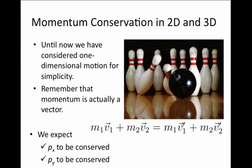We have been considering several examples of collisions and momentum conservation in one dimension, which makes the easiest forms of solving momentum conservation problems. However, we must remember that momentum is actually a vector, and the proper expression for a two-particle collision is: mass times velocity vector for particle one plus mass times velocity vector for particle two equals mass one times v1 prime plus mass two times v2 prime, where all velocities are vectors.